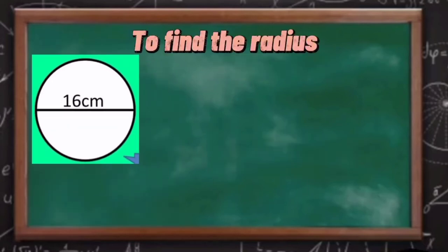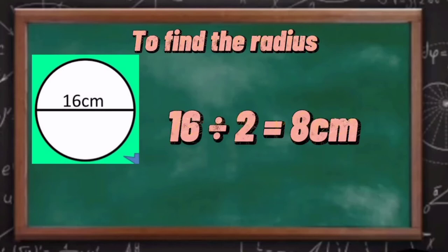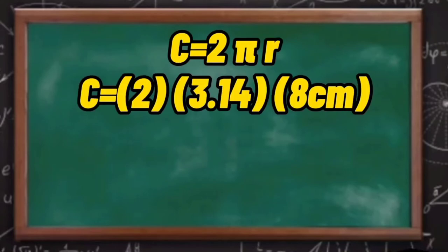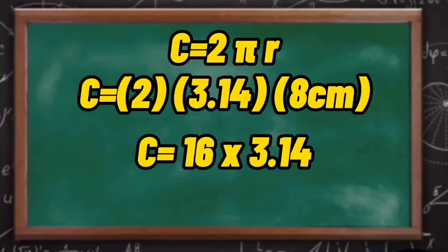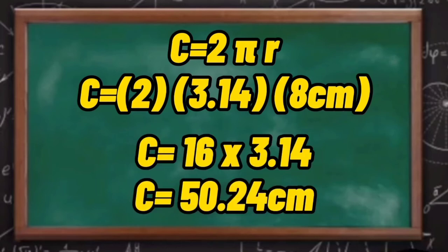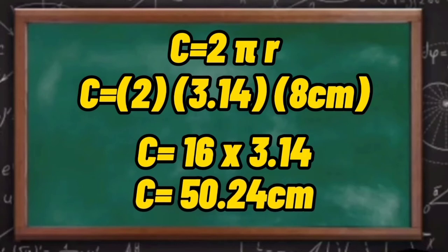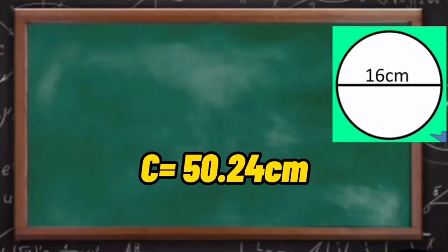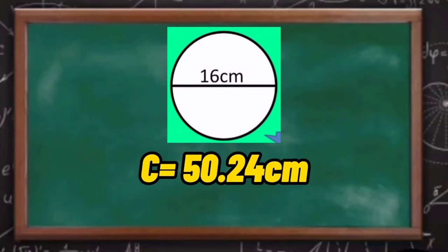simply divide the diameter by 2, which is 16 divided by 2 equals 8 cm. Now, we can already compute. Just substitute the given to the formula. So, the circumference of this circle with a diameter of 16 cm is 50.24 cm.